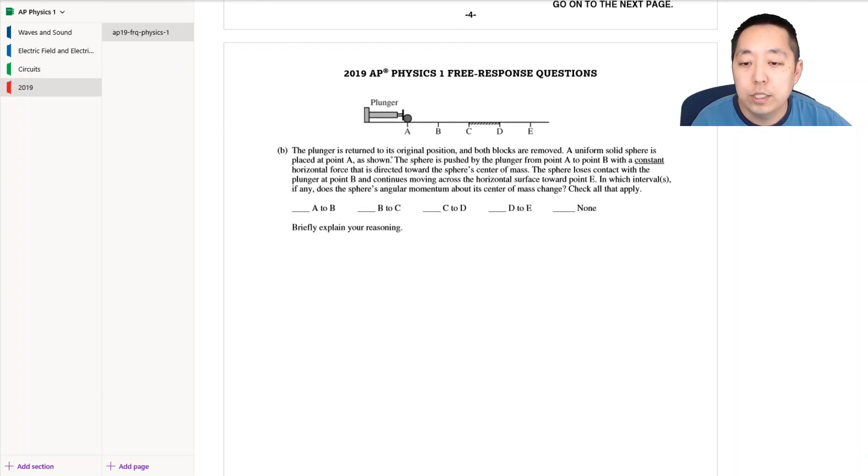Okay now the plunger's returned to its original position and both blocks are removed. A uniform solid sphere is placed at point A as shown. The sphere is pushed by the plunger from point A to B with a constant horizontal force that is directed toward the sphere center of mass. The sphere loses contact with the plunger at point B and continues moving across a horizontal surface towards point E.